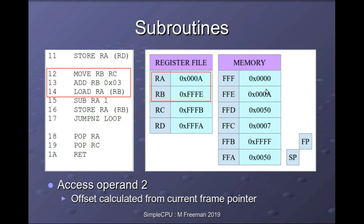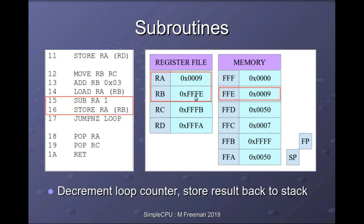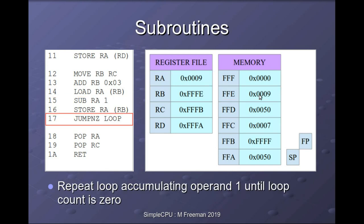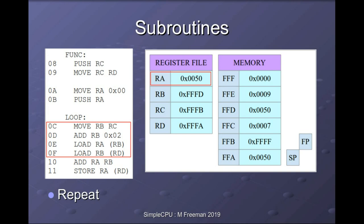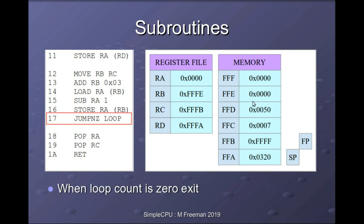Continuing through the multiplication routine, we access the next parameter — the multiplier. Using the frame pointer with an offset of +3 — so 1, 2, 3 — we load the multiplier into a register, decrement it, and store it back to memory. We loop back to the top and repeat, loading the multiplicand and running total each time, until the multiplier reaches zero. We test that with a conditional jump — jump-if-not-zero — and exit out the bottom when the multiplier hits zero.